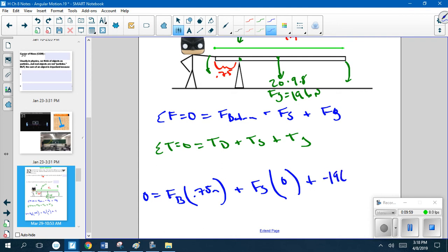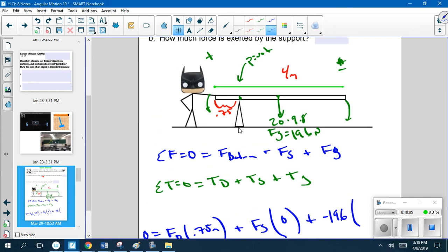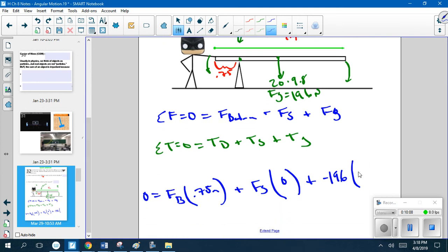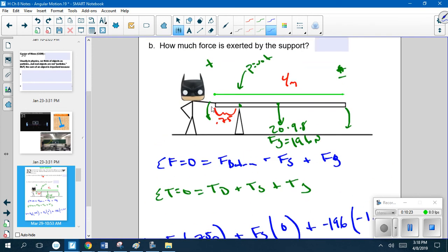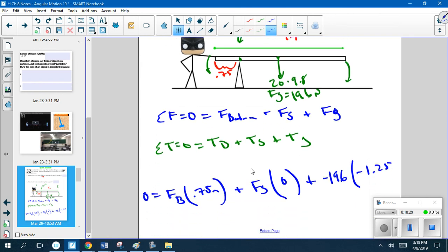Plus the force of gravity, which is negative 196, because that's going down, times—remember it's on the negative side, it's going to go clockwise, so that means that it's negative—1.25 meters away. This is 2 meters, that's 0.75, so the distance between those should be 1.25 meters.